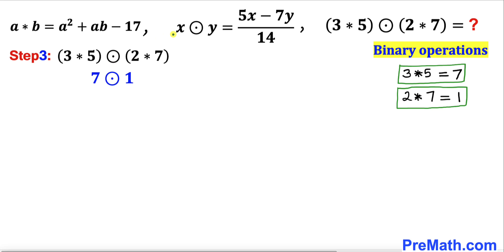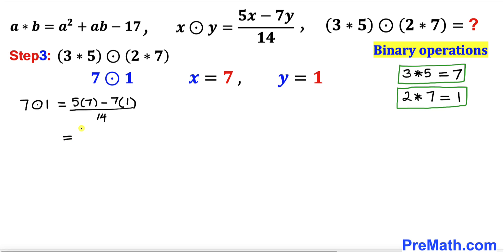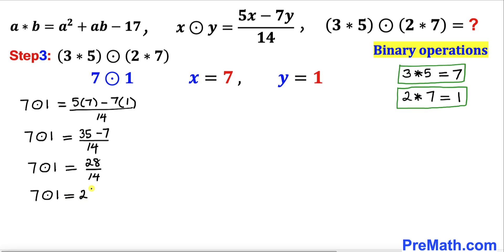Comparing with the circle operation, x = 7 and y = 1. So 7⊙1 = (5×7 − 7×1) / 14. Simplifying the numerator gives 35 − 7 = 28 divided by 14, which equals 2.